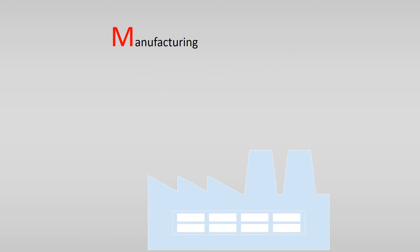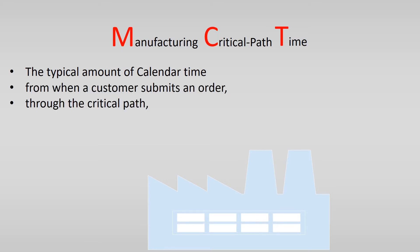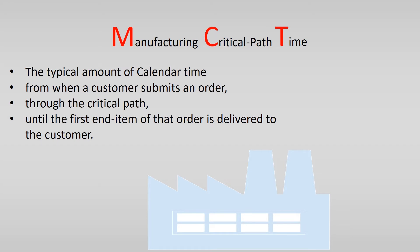MCT stands for manufacturing critical path time and is used to measure the performance of a company or a series of processes in a company to deliver a product to a customer. The MCT is the typical amount of calendar time from when a customer submits an order through the critical path until the first end item of that order is delivered to the customer.